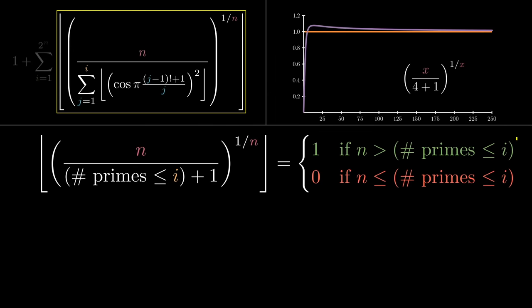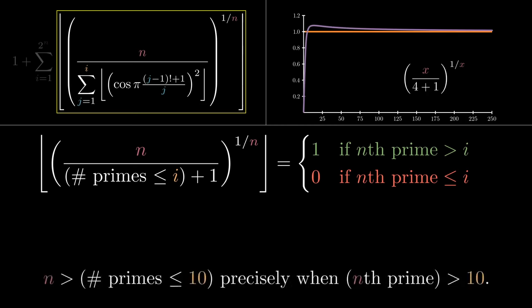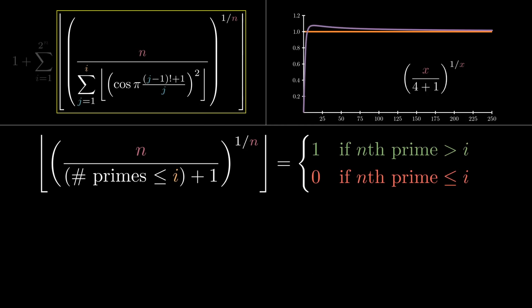The condition that n is greater than the number of primes less than or equal to i is equivalent to the condition that the nth prime is greater than i. For example, n is greater than 4 precisely when the nth prime is greater than 10. Now reorder each inequality to put the focus on i. This is now a detector for numbers i that are less than the nth prime.